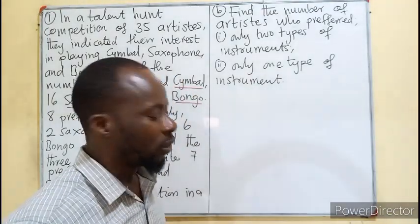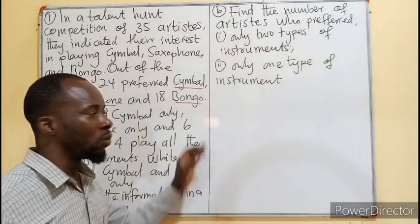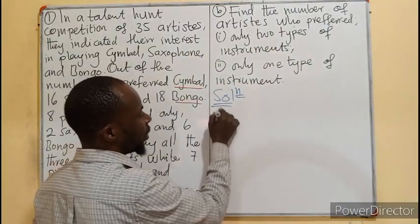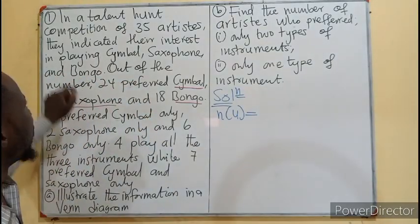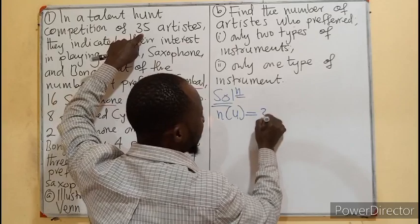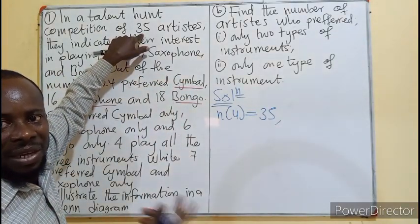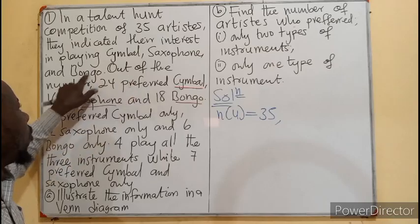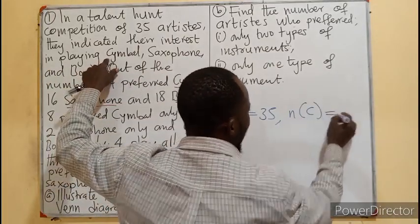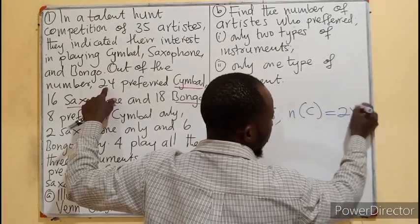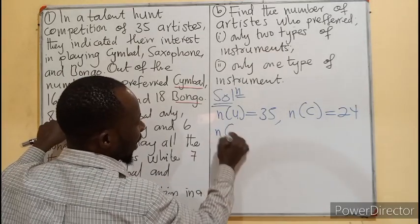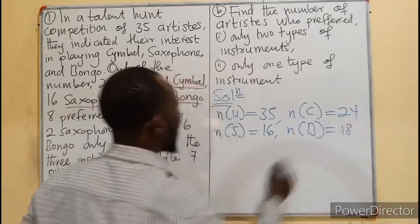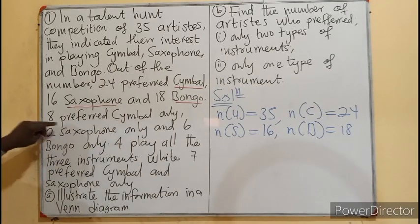For us to draw the Venn diagram, we need to write out the preamble from the question. We represent our universal set, which is the total number of artists, as 35. Then we bring out the three subsets: the set of cymbal, saxophone, and bongo. The number of cymbal is 24, the number of saxophone is 16, and the number of bongo is 18.